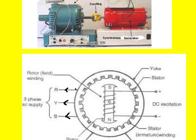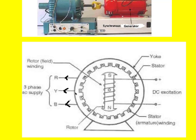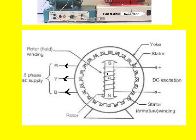That produced stator voltage is taken out through terminals R, Y, and B. This is called the rotor field winding. The outer part of the stator is called the yoke, these slots belong to the stator slots, and the winding is called the stator winding, which is also called the armature winding.